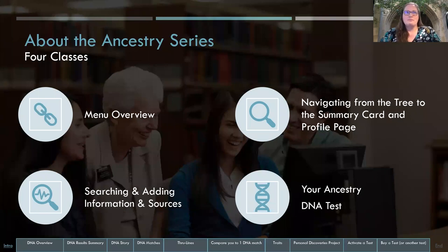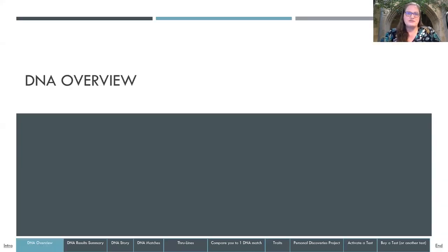This is a four-part series, Beginning Ancestry, and we are on Part 4, your Ancestry DNA test. I want to start with a DNA overview, and I'm going to play a couple of videos from Ancestry Academy, which is a resource I've mentioned before. They'll share a couple of things from their point of view, and then we'll go into the website itself.